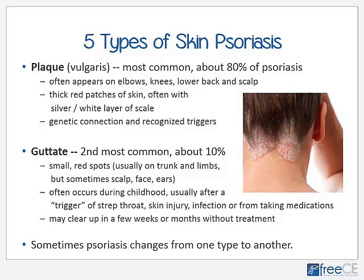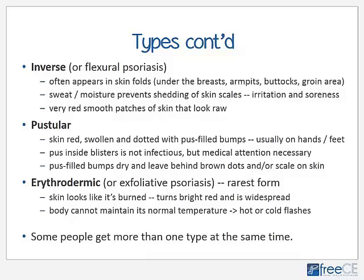Guttate psoriasis may clear up in a few weeks or months without treatment, but it also responds to treatment much like the plaque variety. It is important to note that psoriasis can sometimes change from one type to another. Another type is called inverse or flexural psoriasis, which often appears within skin folds such as those under the breasts, within the armpits, buttocks, or groin. It is more common in people who are obese, and the sweat and moisture in those folds prevents shedding of skin scales, creating irritation and soreness.